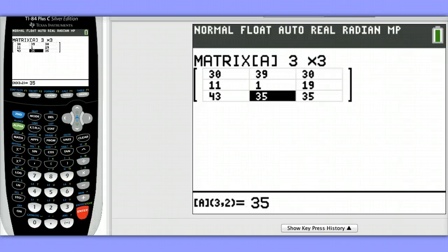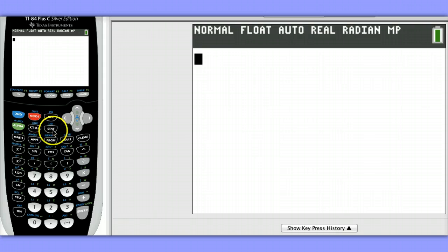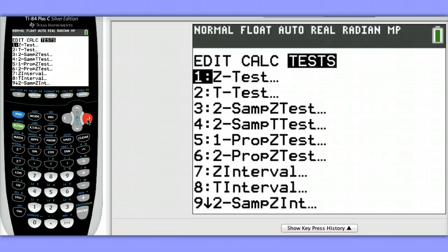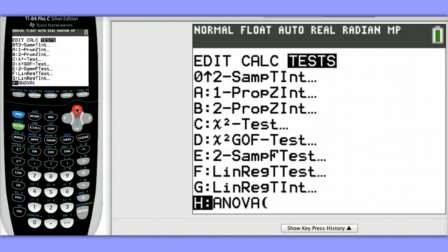Now that our data is entered, we're ready to run the test. Hit second, mode, to get back to the home screen. Then hit stat, go over to tests, and scroll to find chi-square test. I'm going to hit the up arrow since I know chi-square test is near the bottom. This is a little quicker way to get there.